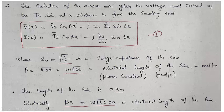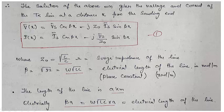Here Z₀, the surge impedance of the line, is equal to the square root of L over C, and its unit is ohms. And β equals the square root of Y·Z; putting in the values of Y and Z and omitting j, it equals j·omega·root(LC), with magnitude omega·root(LC) being the electrical length of the line in radians per meter. This has been defined as the phase constant in Power Systems I — the physical length is in kilometers but the electrical length is β times A, that is omega·root(LC)·A.